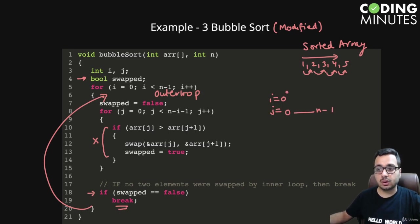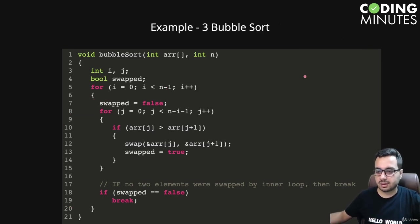The outer loop is just going to run only once. This is the best case, so we can say the best case complexity of this bubble sort is order of n. Now let's talk about the worst case.